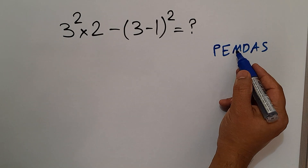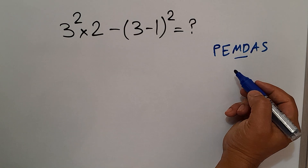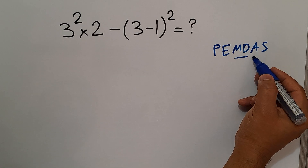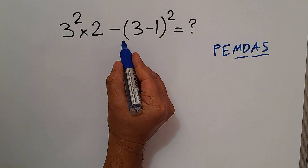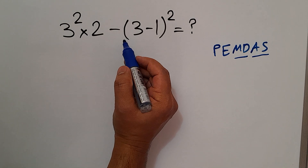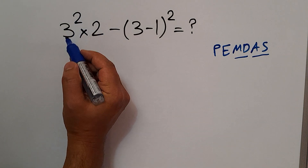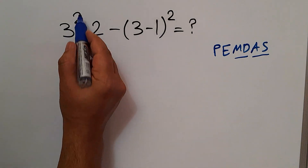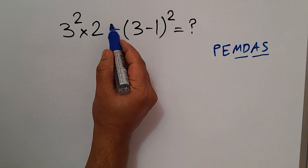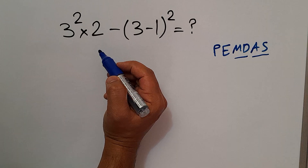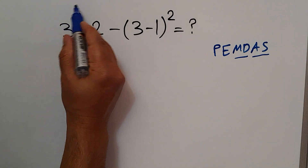Remember that multiplication and division have equal priority and we have to work from left to right, and the same applies to addition and subtraction. Here, we have two exponents, one multiplication, and one subtraction, so we handle the exponents first, working from left to right.